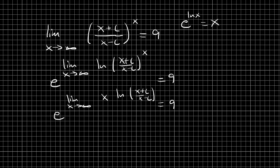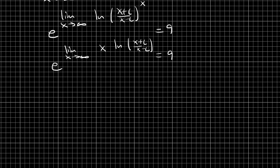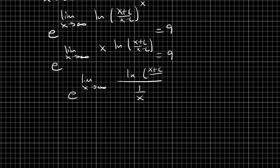The goal here is to use L'Hôpital's rule because we have infinity times 0. So let's rewrite x as 1 over (1 over x), placing 1 over x in the denominator and the natural log in the numerator. Now we have a 0 over 0 form for the limit, so we just have to take the derivative.